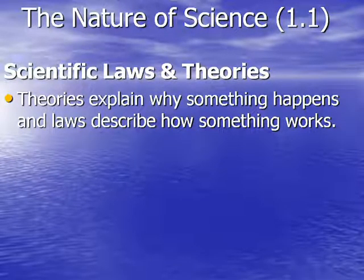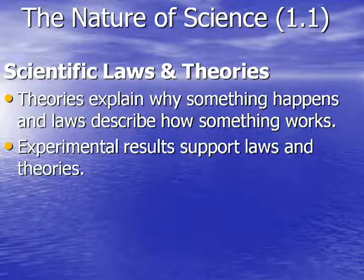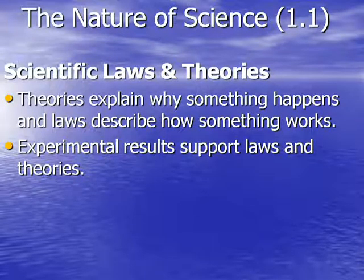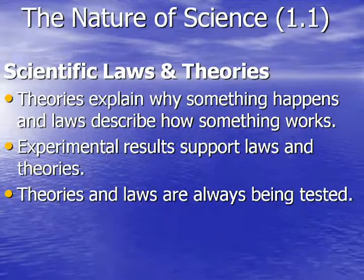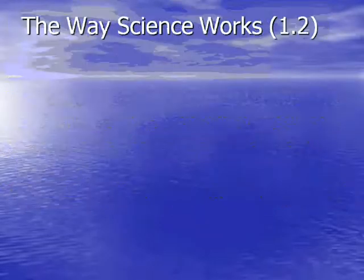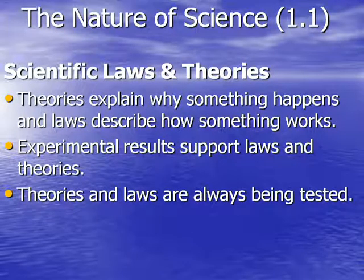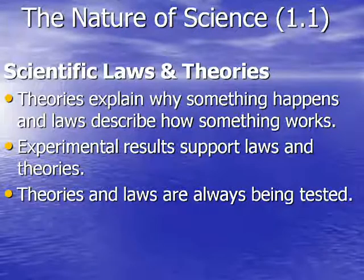Now let's talk about scientific laws and scientific theories. Theories explain why something happens and laws describe how something works. Experimental results support both laws and theories — both have experiments that back up what they're saying. Theories and laws are always being tested; scientists are always trying to see if they can finalize what they know for sure to be true. An example of a scientific law is the law of gravity: if you drop a pen, it falls to the ground. No one disputes that — that's a scientific law.